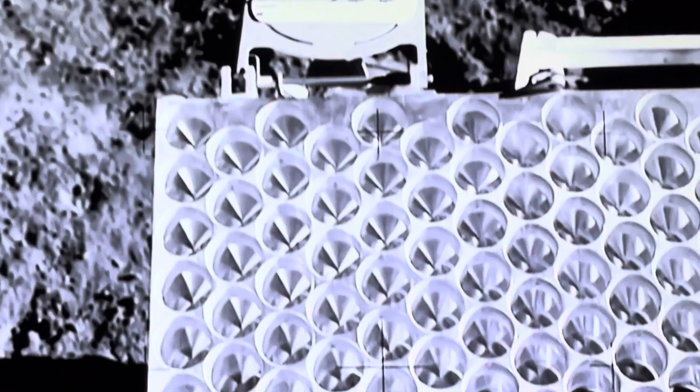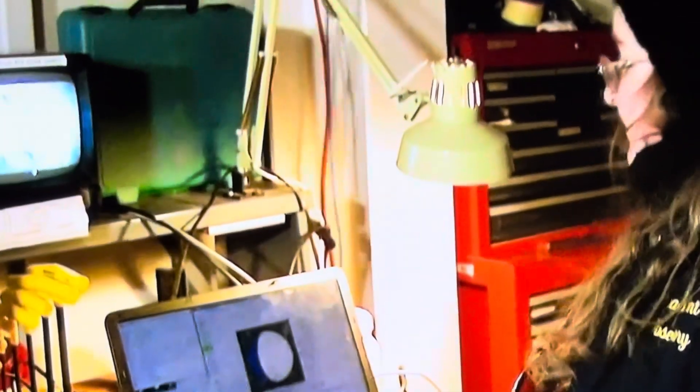Apollo 15, crewed by Scott, Irwin, and Worden, set down at the base of the Lunar Apennine Mountains, which is where they placed the retroreflector. Wow, that's the location where Apollo 15 landed on the moon. That is so cool.